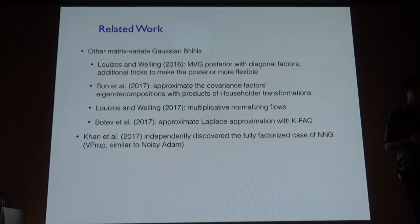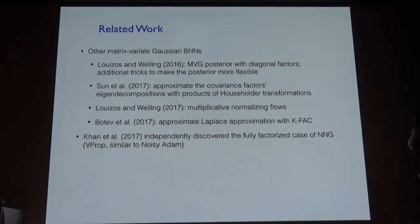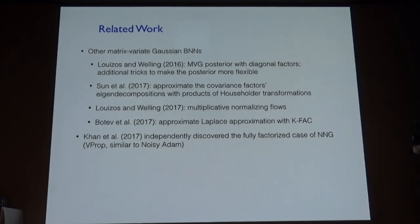There have been various other approaches to training matrix-variate Gaussian BNNs. Christos Louizos introduced probably the first one, but they imposed additional structure making the Kronecker factors diagonal — a very constrained form. Another closely related approach by Botev in 2017 approximated the Laplace approximation for the posterior using KFAC; they're doing the Laplace approximation while we're doing variational inference. I also note that Mishkin and colleagues independently discovered the fully factorized case of noisy natural gradient — the paper came out almost the same day on arXiv.